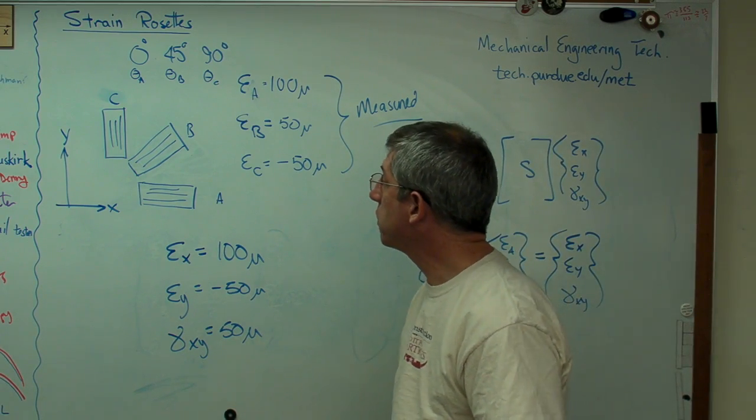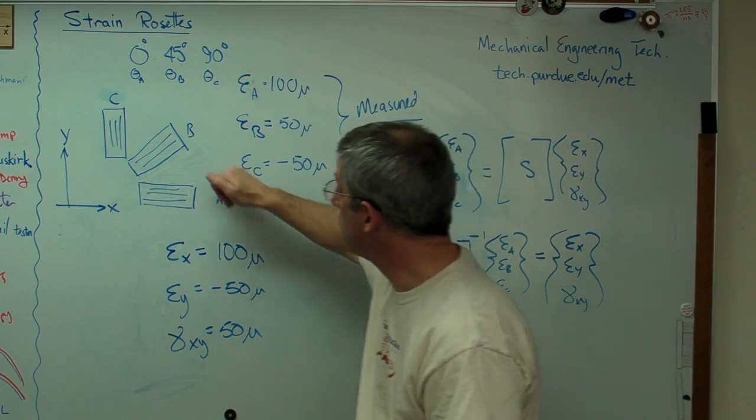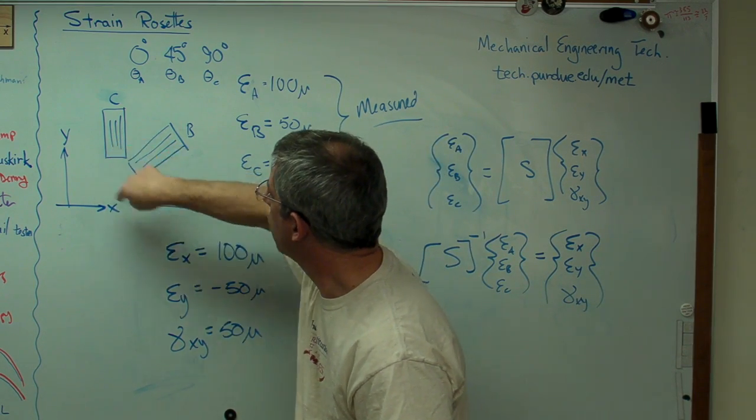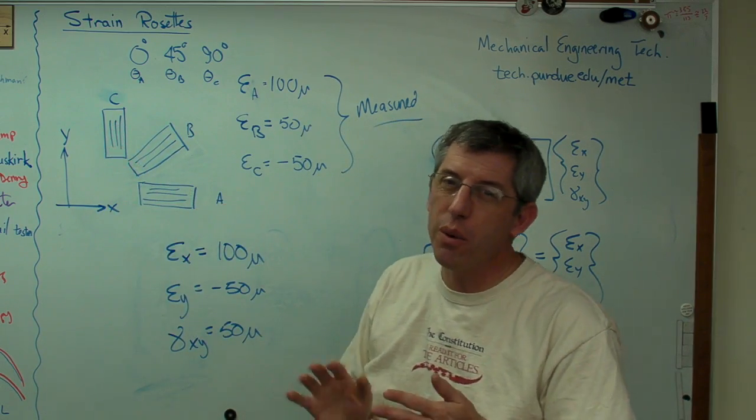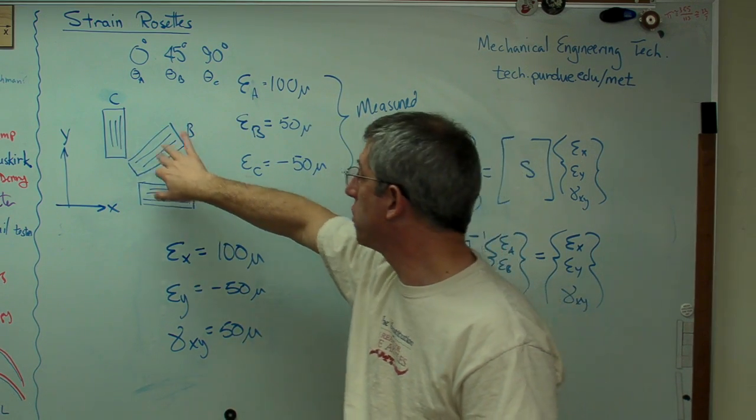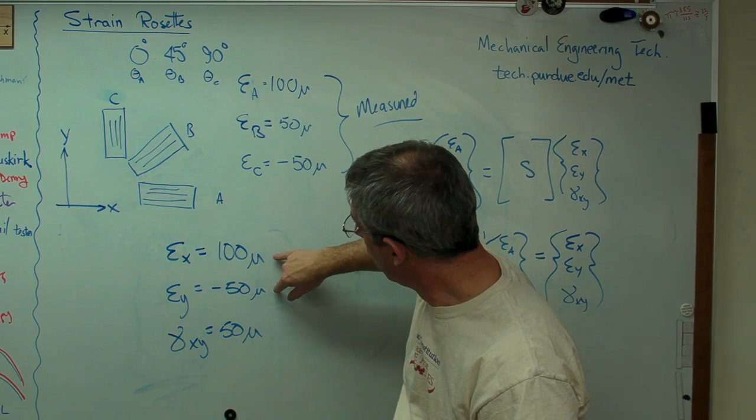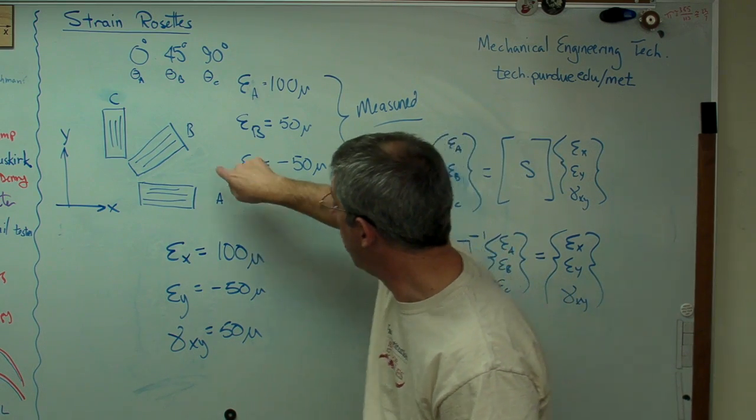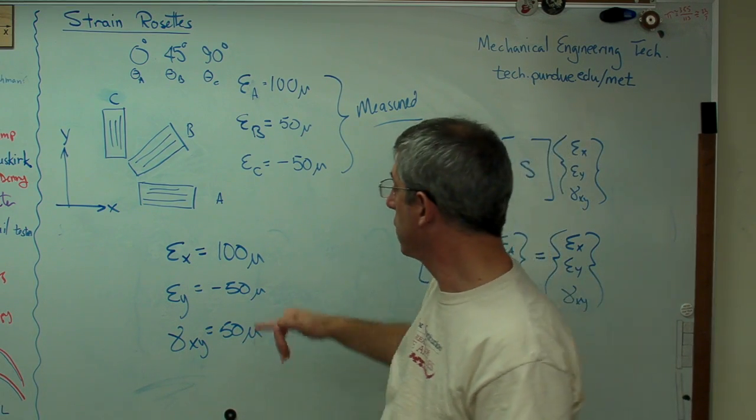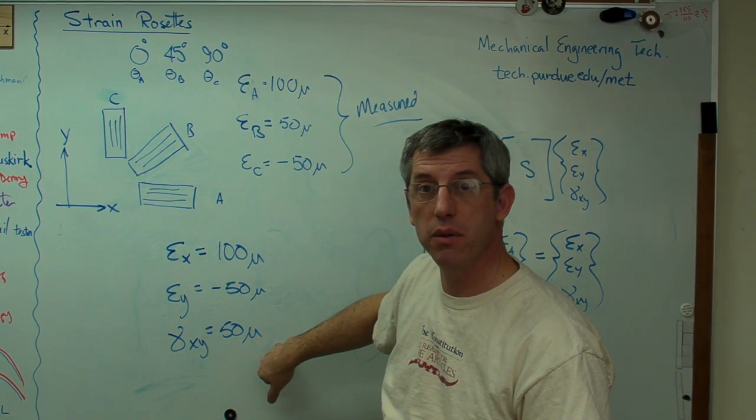So what we've done is we've started out with a strain gauge rosette. Three strain gauges that measure only normal strain, but they do it in three different directions. We assume also that this rosette is so small that there's no change in the strain field over the rosette. There's always a little, hey, it's an approximation. We start out with three normal strains in whatever directions happen to be convenient. And we're able to transform them into strains along our assumed coordinate system. So I start out with A, B, and C in whatever directions those happen to be. And as long as I know what those directions are with respect to my coordinate system, I come up with epsilon X, epsilon Y, and the shear strain between them. Pretty cool, huh?